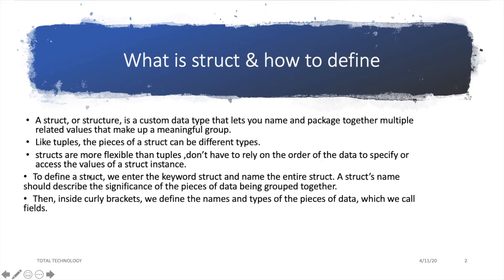Structs are more flexible than tuples because you don't have to remember the order of data types to access values. In struct we use the name itself. In a tuple you always rely on dot notation and an index like 0, 1, 2, but in struct you can call using dot notation followed by the name — the order doesn't have to always be the same. So let me explain those things through code and it will be clear.